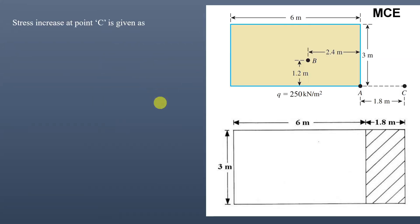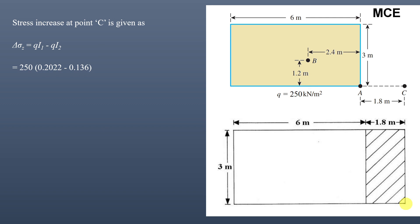The stress increase at point C is the stress at the corner of the large rectangle minus the stress from the small rectangle: 250 × (0.2022 − 0.136) = 16.55 kilopascal. This is the stress increase at point C at a depth of 3 meters. In general, to find stress increase at any depth below a uniformly loaded rectangular area, make the target point a corner of a rectangle, then use the influence coefficient table.